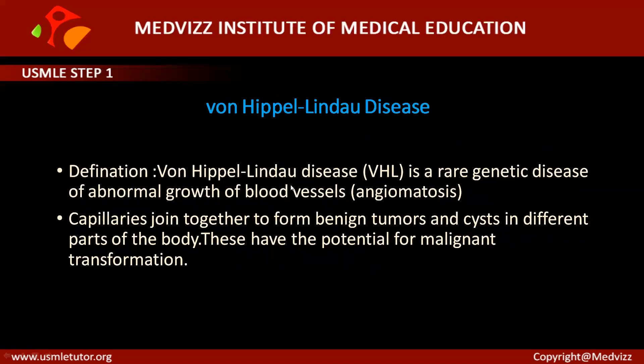The typical etiology is deletion of the VHL gene, which is considered the most common cause. It is autosomal dominant. The VHL gene is a tumor suppressor gene located on chromosome 3. Von Hippel-Lindau is a rare genetic disease characterized by abnormal growth of blood vessels — a condition called angiomatosis.